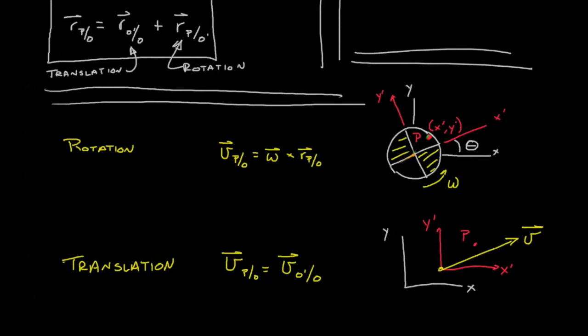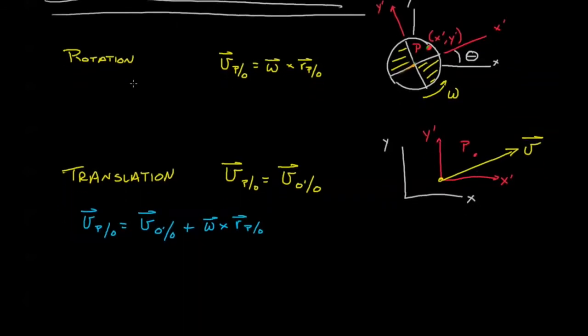We can combine these two together, and we see that the velocity of point P with respect to O equals the velocity of O' with respect to O plus omega cross position with respect to O'. And if we wanted to spell that out a little bit,